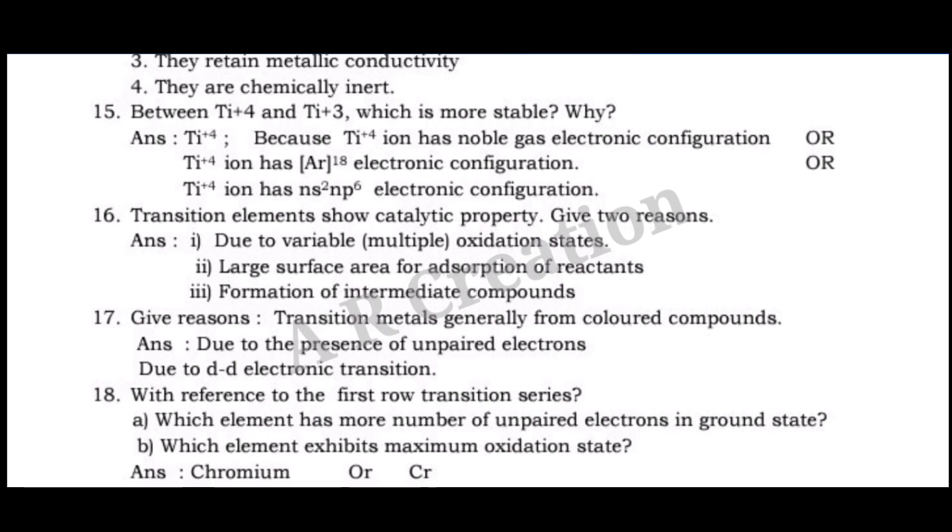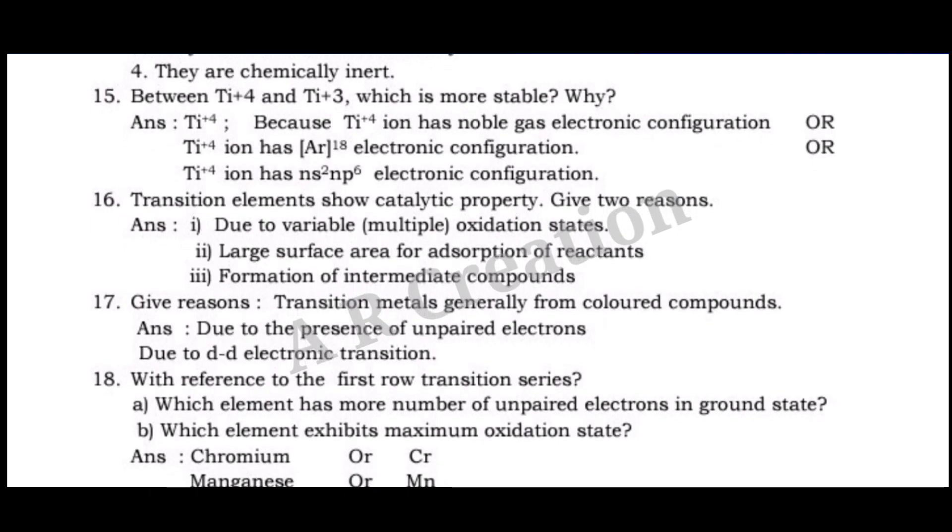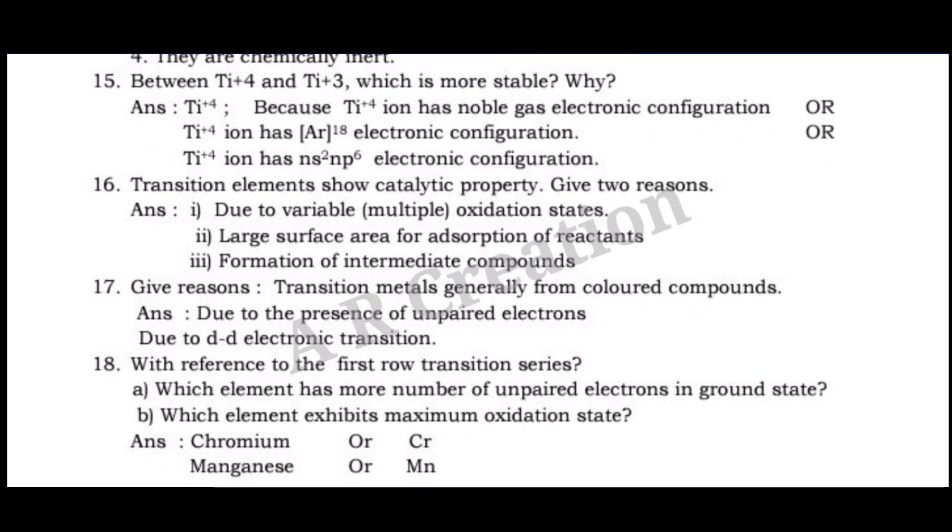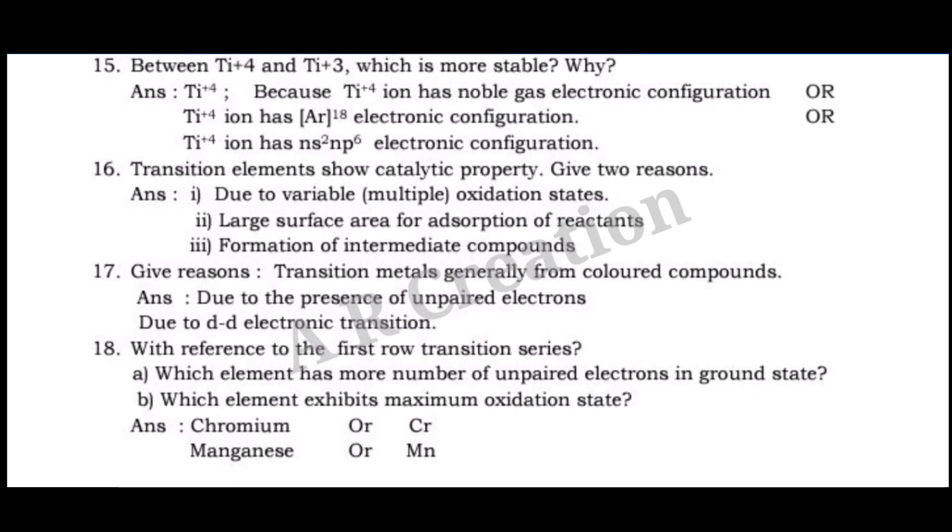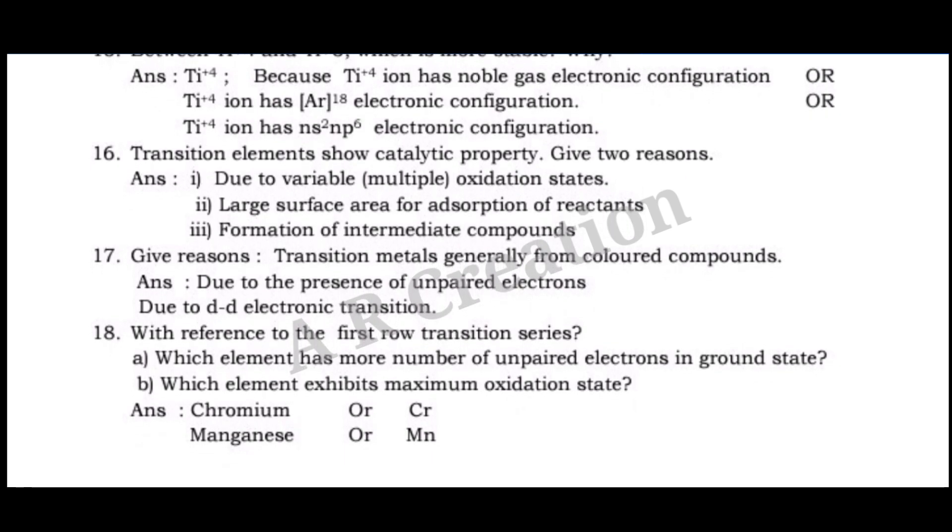Question 17. Give reasons: Transition metals generally form colored compounds. Answer: Due to the presence of unpaired electrons due to d-d electronic transition.